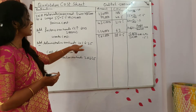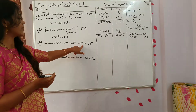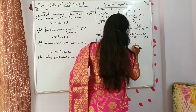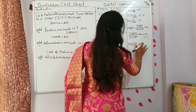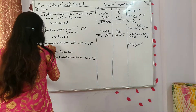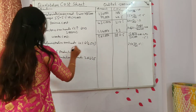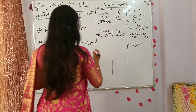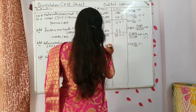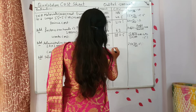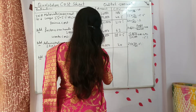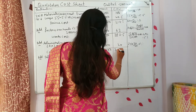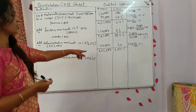Administrative overheads decreased by 20%. So 25 into 20 by 100 — you will be getting 5 rupees. It is decreased, so you will take 25 minus 5 equals 20, into 2000 units — you will get 40,000. Cost of production is 6,01,000 and cost per unit is 300.5.